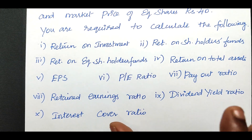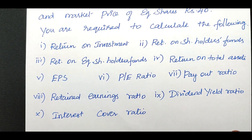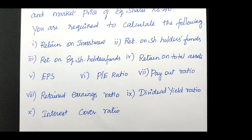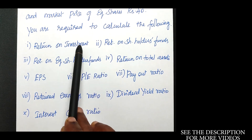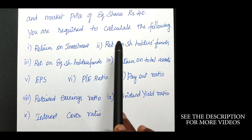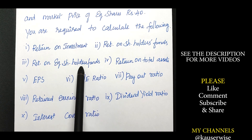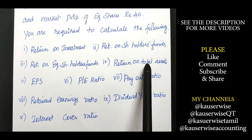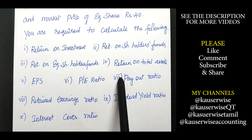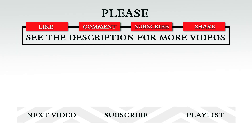So far we have calculated 4 ratios based on return: number 1, return on investment; return on shareholders fund; return on equity shareholders fund; and return on total assets. The remaining ratios we will discuss in the next video — you can find the playlist link in the description box. Hope you understand this concept. Please hit like, comment, subscribe and share with your friends. Thank you.